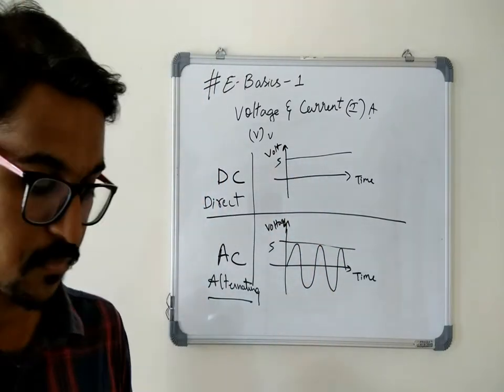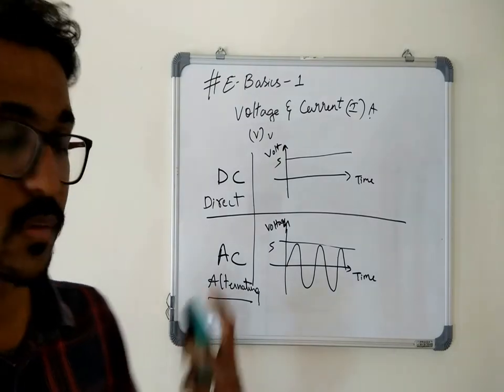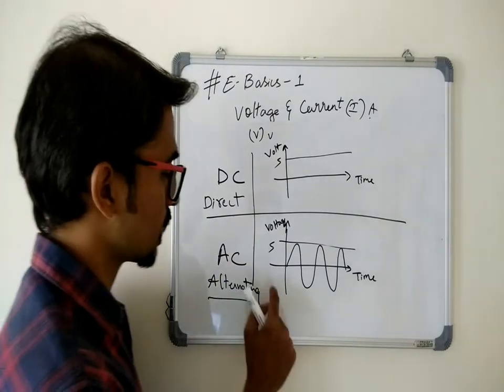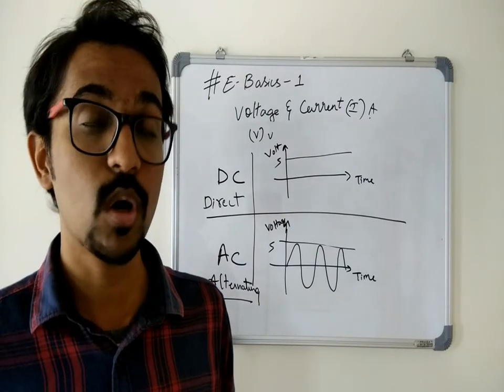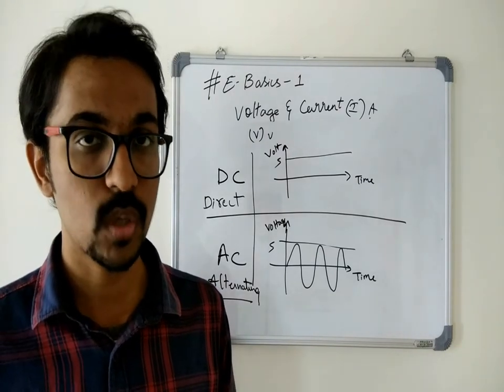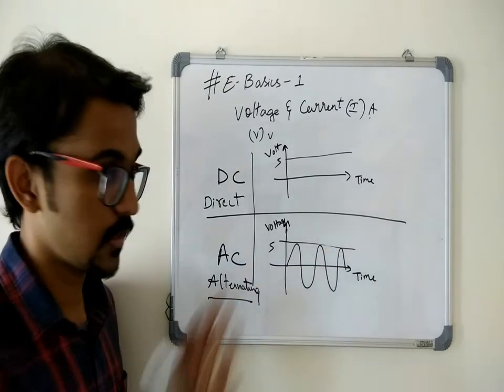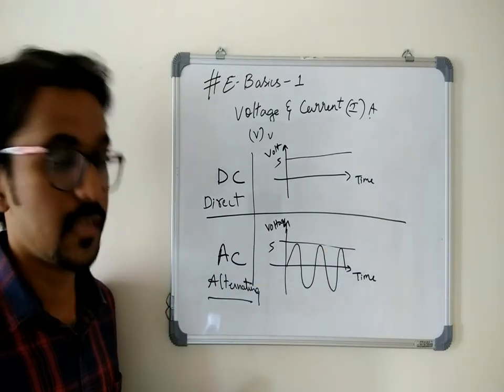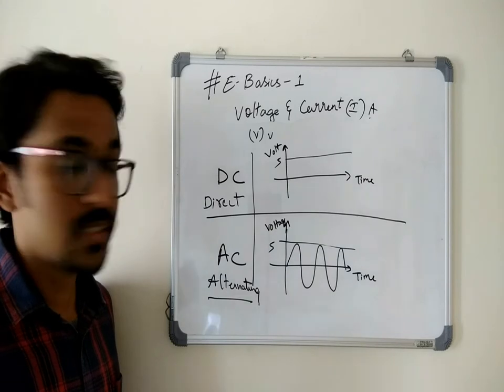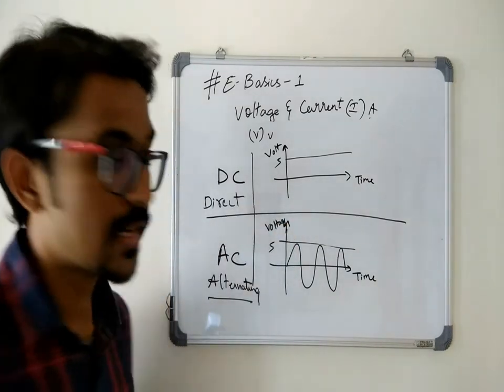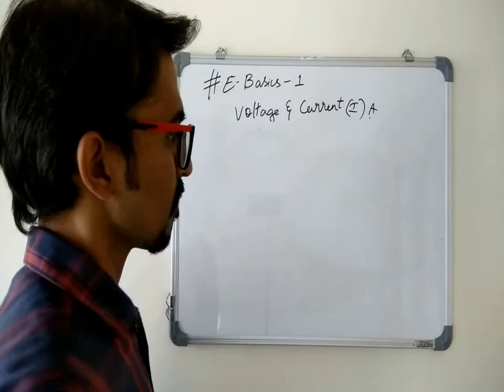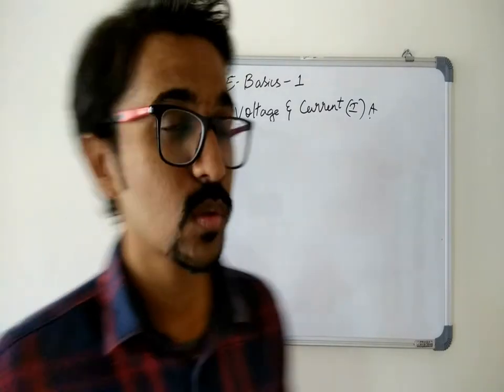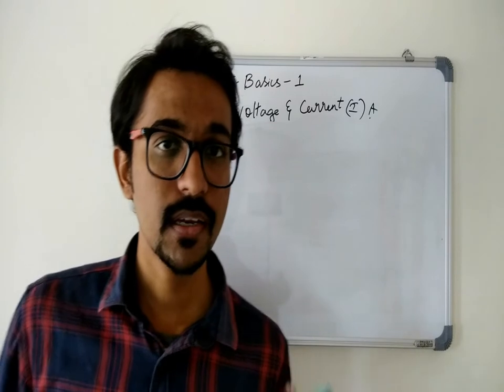Whatever we get in our main supply is usually alternating current because alternating current can travel longer distances with very less loss. So that's why we use alternating current in our supply. But considering our mobiles and batteries and other things, they usually have DC current because battery cannot store alternating current, it can only store DC current.